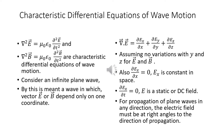Let us consider an infinite plane wave — by this is meant a wave in which vector E or B depends only on one coordinate. The divergence of E is δEx/δx + δEy/δy + δEz/δz. Assuming no variations with y and z for E and B, δEx/δx = 0, meaning Ex is constant in space.